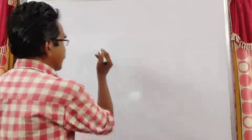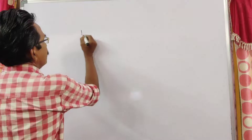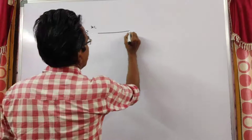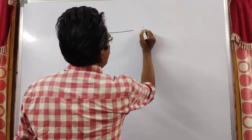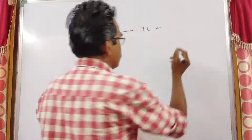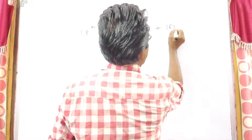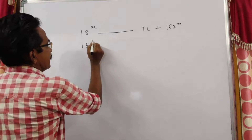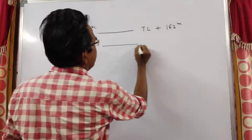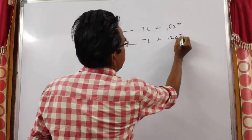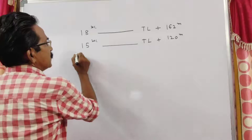What is the length of the train? In 18 seconds, the train travels a distance of train length plus a platform of 162 meters. In 15 seconds, the train travels train length plus 120 meters platform.